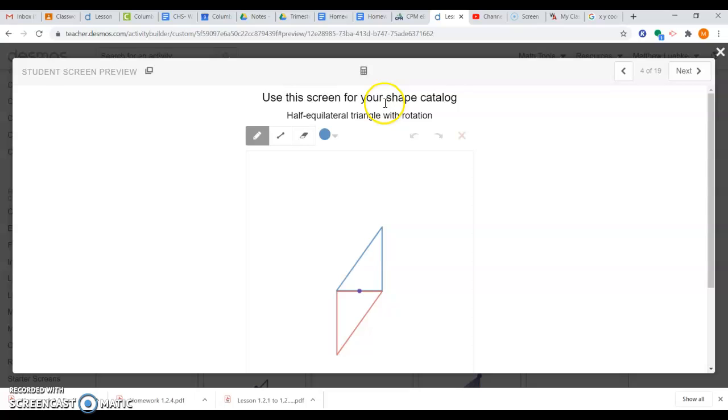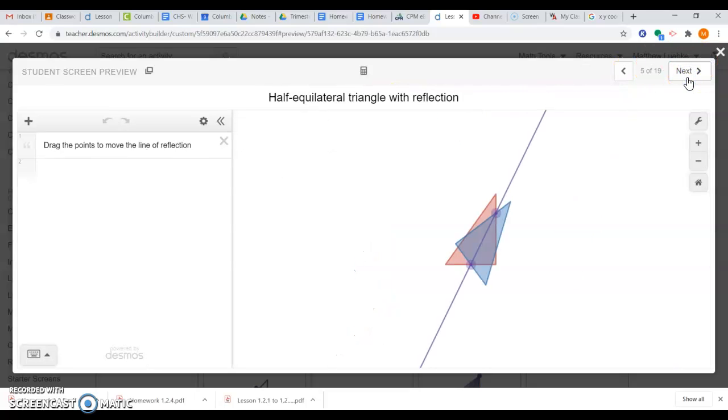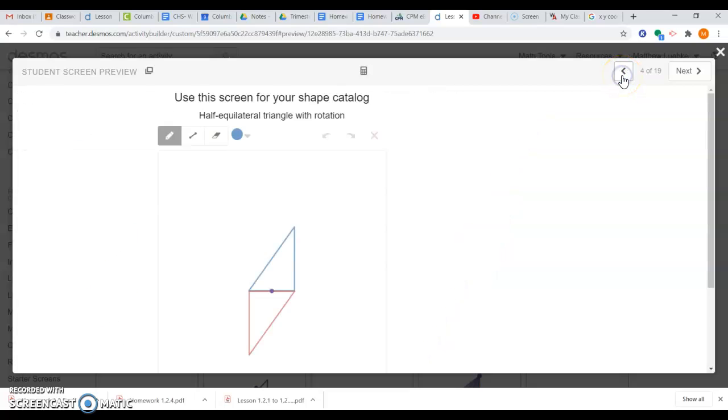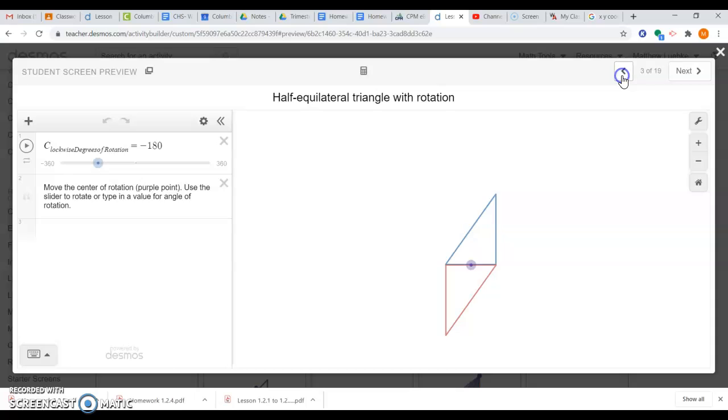Sorry, that's a half equilateral triangle, I believe. I think I was calling it a half square. Moving it on here, we have the half equilateral triangle, and we're going to reflect it. We're going to try to make a new shape using reflection now. This one was rotation, we're going to try using reflection now.